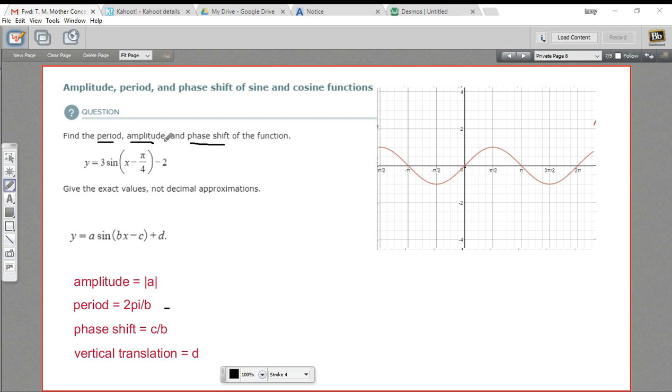The amplitude of the function is how far it goes above the midpoint and how far it goes below the midpoint. In the regular sine function, the amplitude is 1 - it goes up to 1, down to negative 1. And the phase shift is how much it's pushed left or right on the graph.